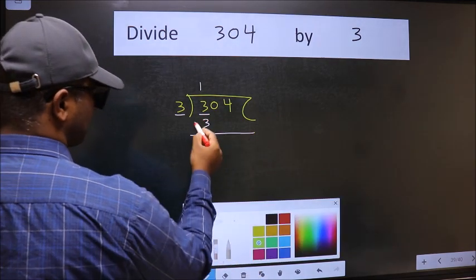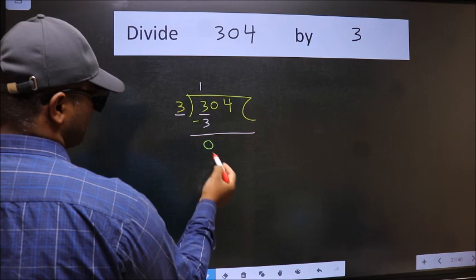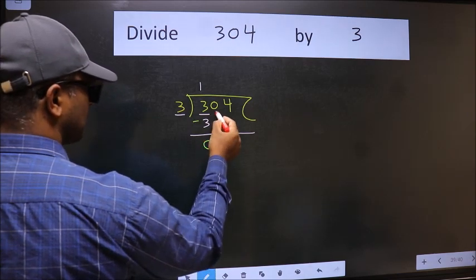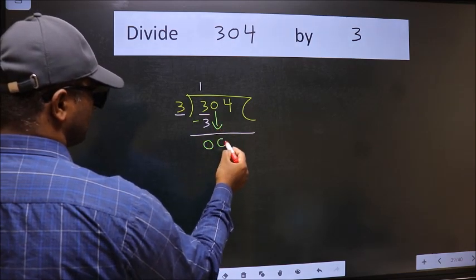Now we should subtract. We get 0. After this bring down the beside number. So 0 down.